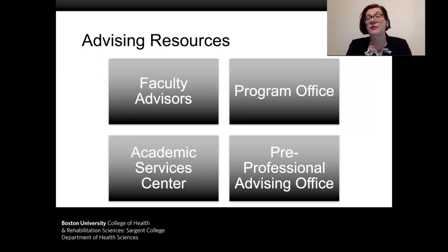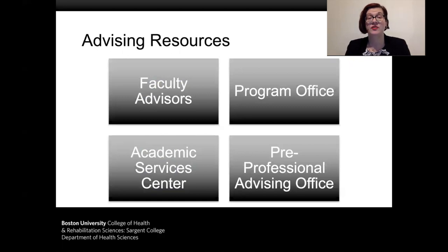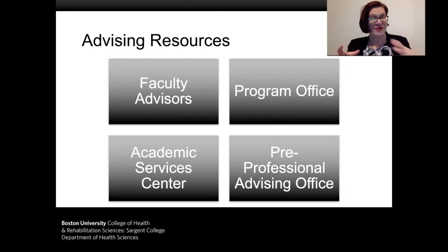Each student in the program is assigned a faculty advisor that they will meet with over the course of their four years of undergraduate study about course selection for the upcoming semester, as well as about their interest in graduate school, career opportunities, or how to get in touch with different resource offices on campus. We also have the Academic Services Center and a coordinator in the program office to support students — part of what gives our program a small college feel within a large Research One institution.